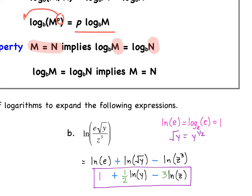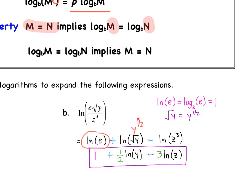Note that the square root of Y is really Y to the one-half. Also, Ln of E is log base E of E, and when the base of your log is the same as the argument, you're left with the power — so Ln of E simplifies to 1. We can then move the power of one-half out front to get plus one-half Ln of Y, and bring out the power of 3 to get minus 3 Ln of Z. That's the fully expanded version.